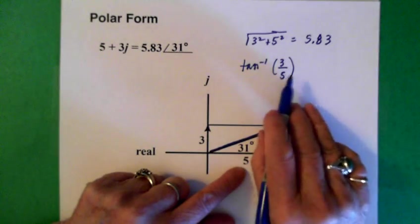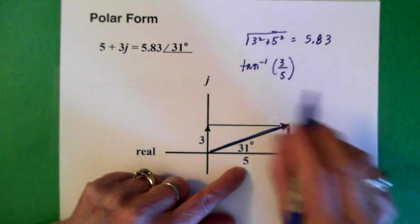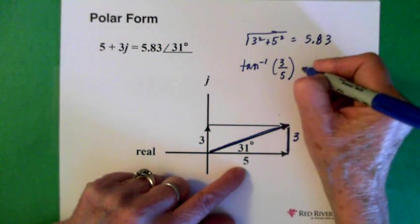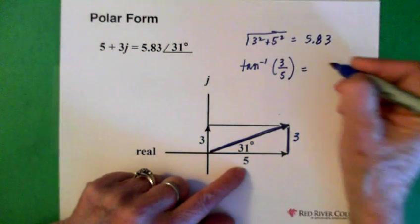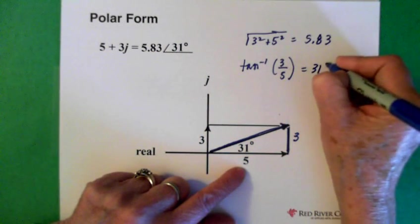And we do that calculation, so the inverse tan of this. And we end up with this angle, which is 31 degrees.